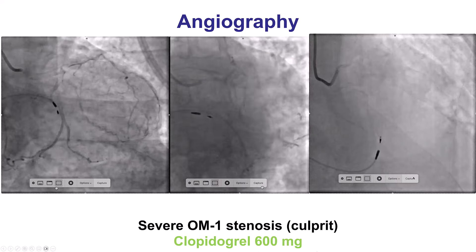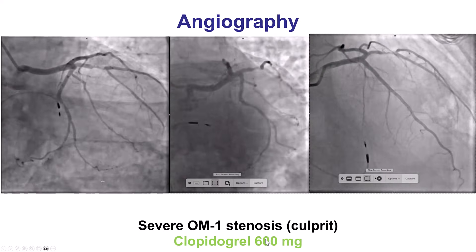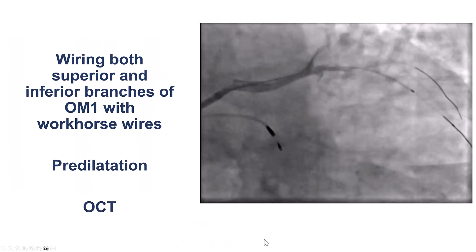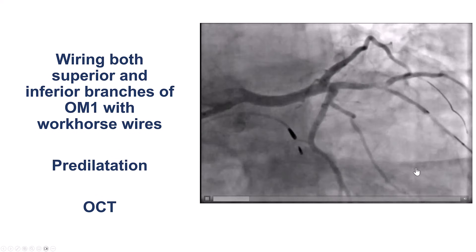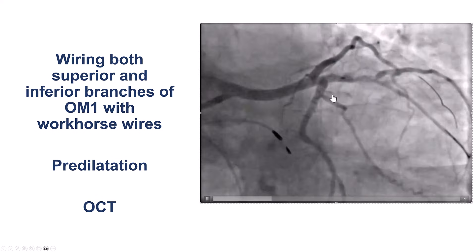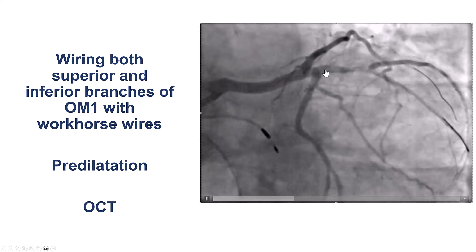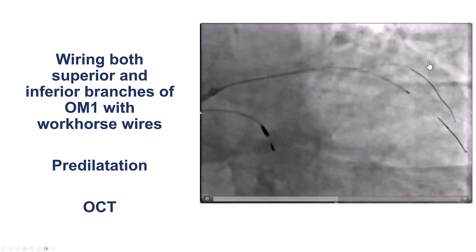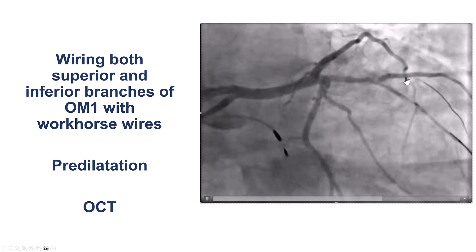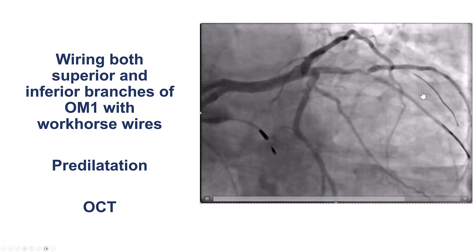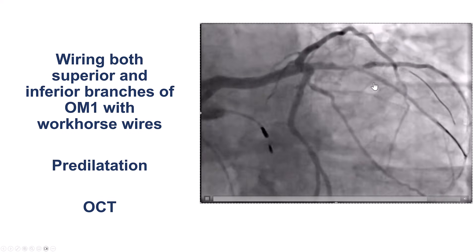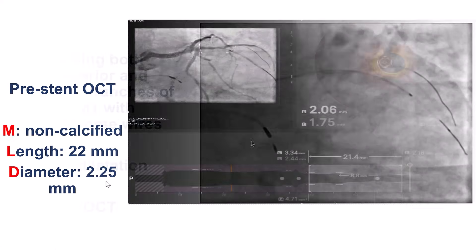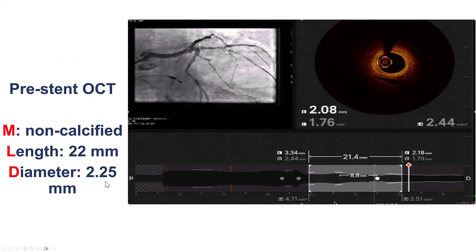The patient was loaded on the table with 600 milligrams of clopidogrel. We decided to treat the culprit lesion and wired both branches, since both were fairly significant. We then did optical coherence tomography after pre-dilatation.